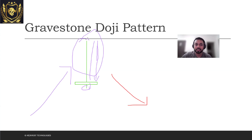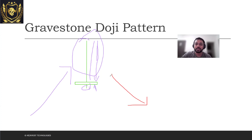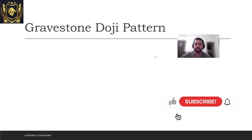The sellers are actually trying to push downward and they are successful in pushing the price downward, rather than the buyers trying to push the price upwards. Because of this push, you can expect a downtrend which will now begin. This is what the Gravestone Doji pattern tells us.